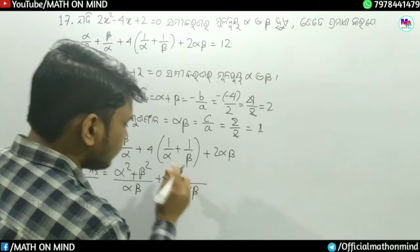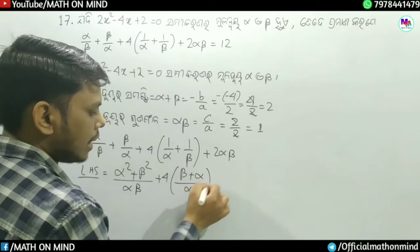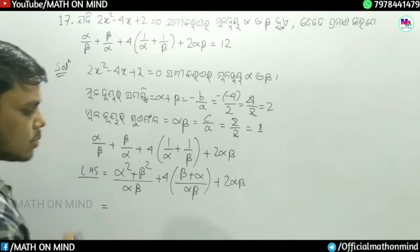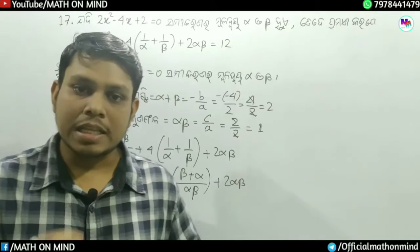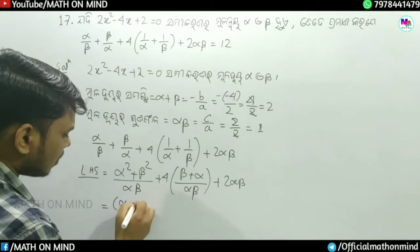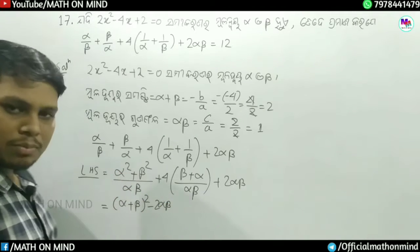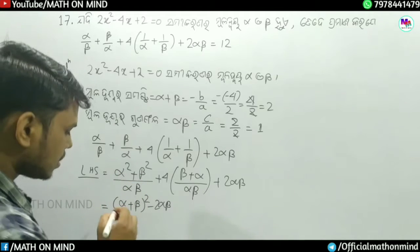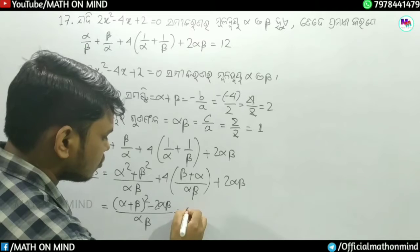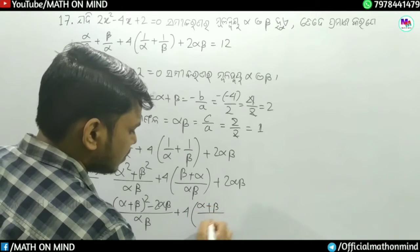Now alpha by beta plus beta by alpha equals alpha square plus beta square divided by alpha beta plus 4 into 1 divided by alpha plus 1 divided by beta plus 2 alpha beta.